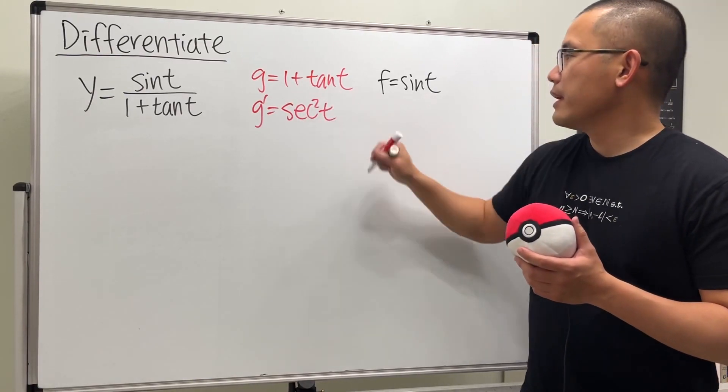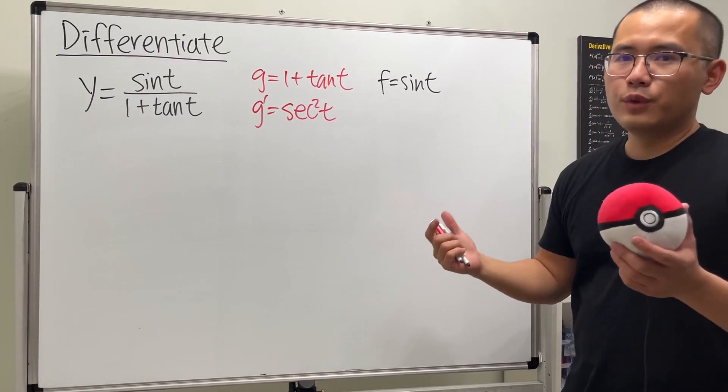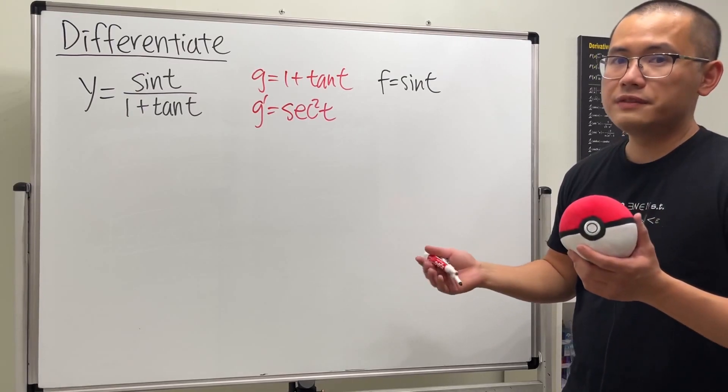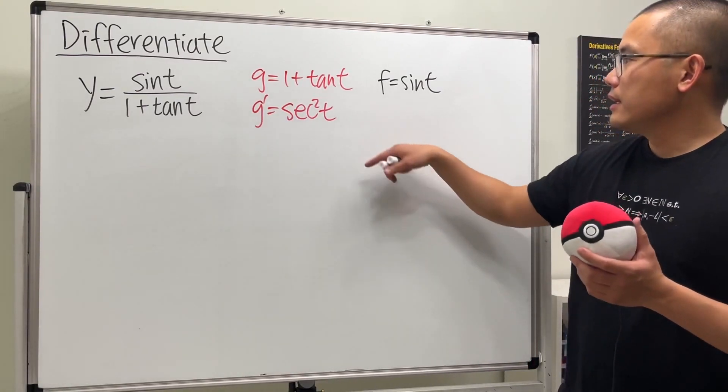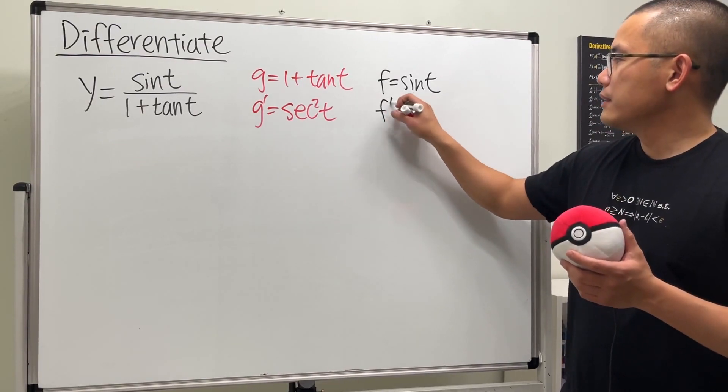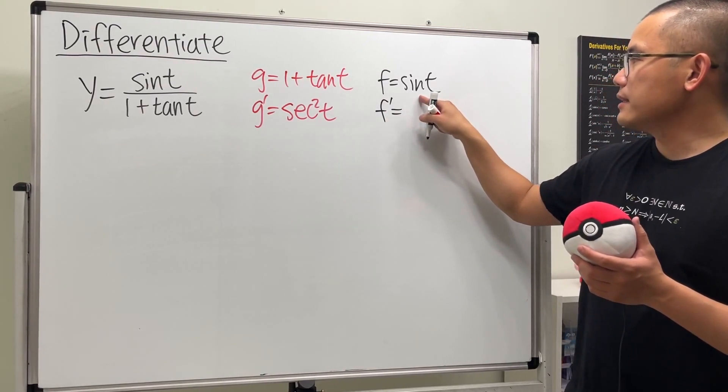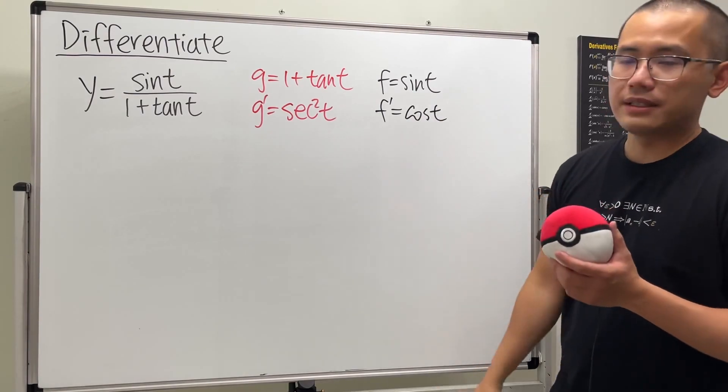So here, let's go ahead and write that down. And in fact, I have a video, if you want to see how I remember all the derivatives, go ahead and check that out. Link will be in the description for your convenience. And then we have the derivative of sine. It's going to give us cosine t. So that's the idea.